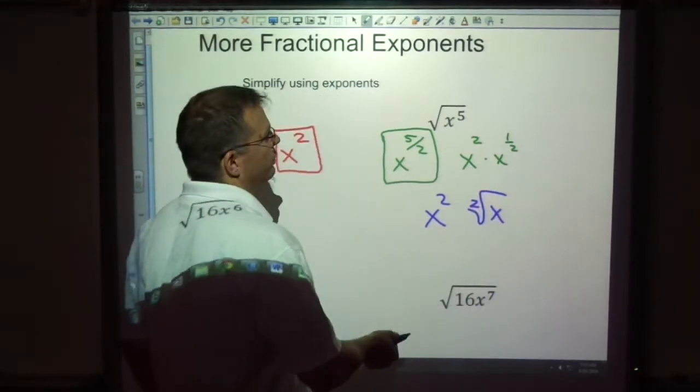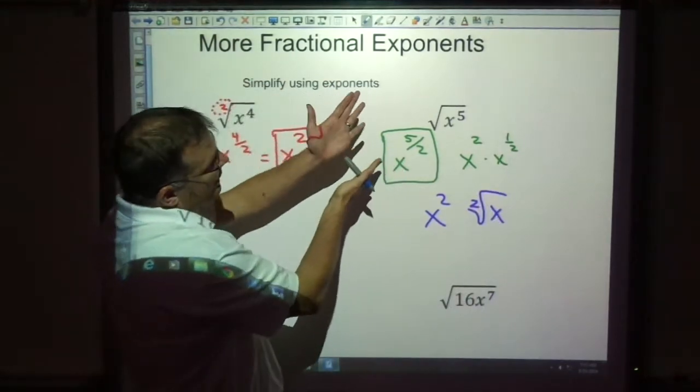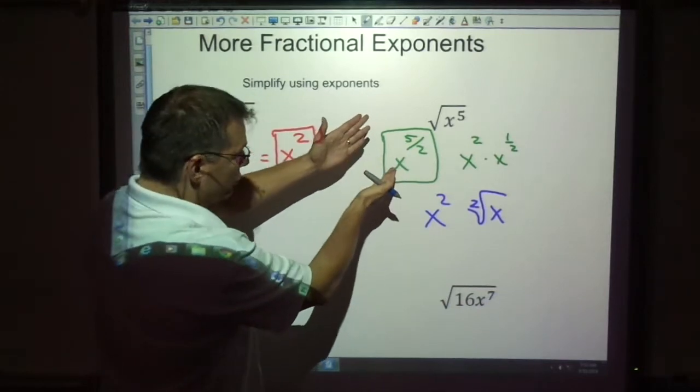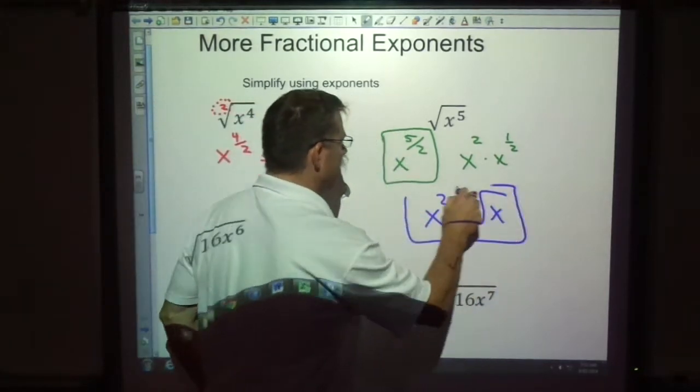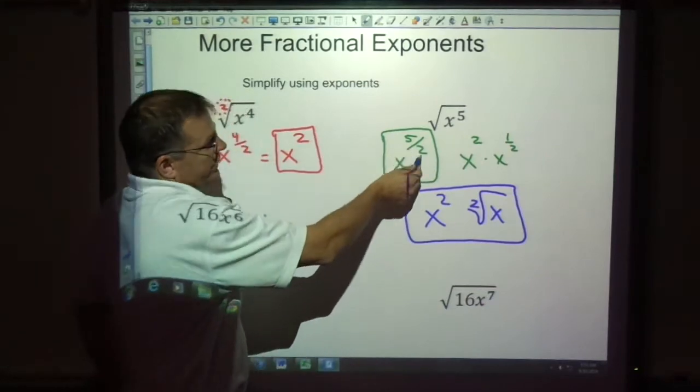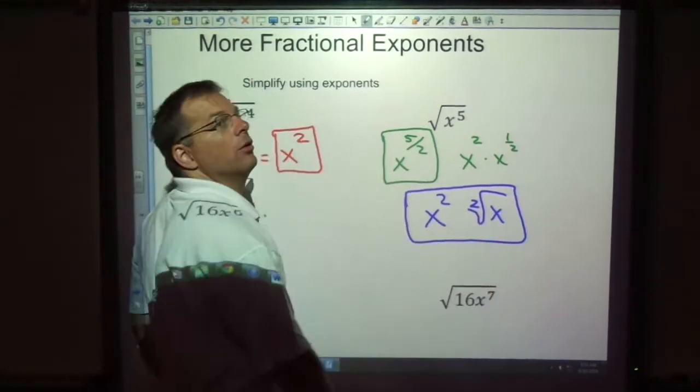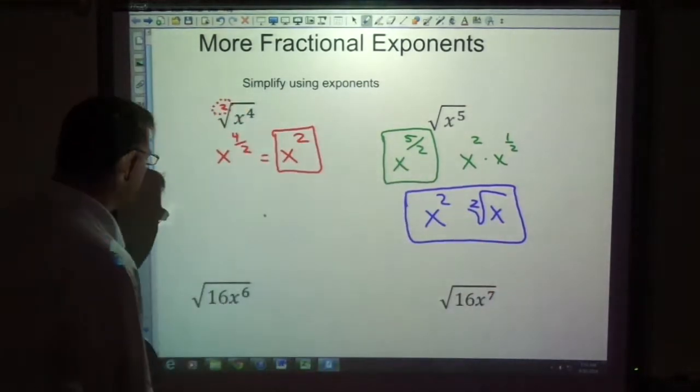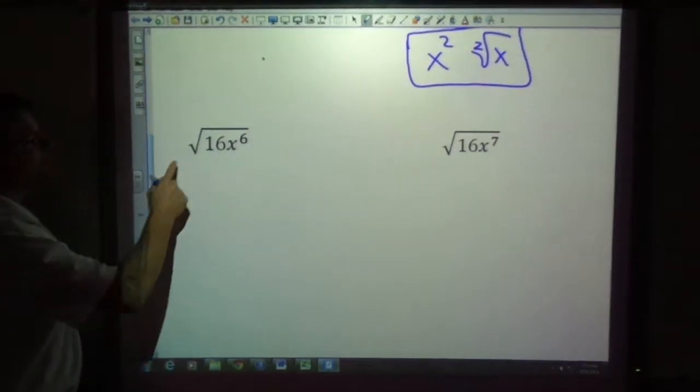And this would be the square root of x to the first. So if the directions were starting with this and saying, simplify using radicals, we would have this as our final answer here. Because we know it goes in two whole times with one left over in the radical. I wanted to clarify that. So what if you've got two pieces together?